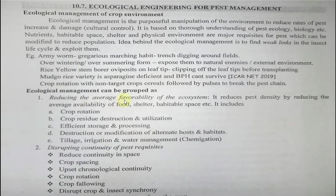Ecological management can be grouped as: first, reducing the average favorability of the ecosystem — it reduces pest density by reducing the availability of food, shelter, and habitable space. Methods include crop rotation, crop residue destruction, and prevention of ratoon cropping by going for only annual banana planting. Efficient storage and processing also help.